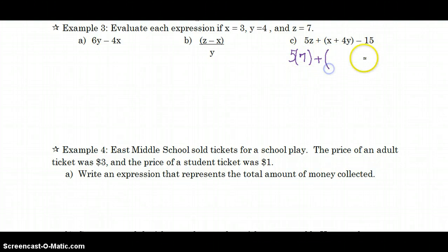Notice how I'm going to put parentheses. Just to say 5 times Z and replace Z with 7 plus. Now here's parentheses already. But within the parentheses, I'm going to substitute X, which was 3, plus 4 times Y, using parentheses here, which is 4, minus 15.